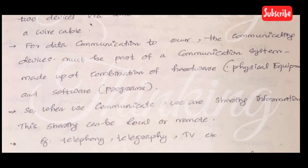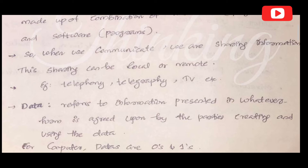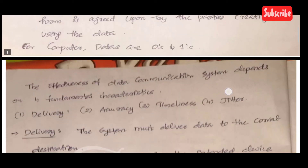When we communicate, we are sharing some information. This sharing can be local or remote — for example, telephony, telegraph, TV, etc. Data refers to the information presented in whatever form is agreed upon by the parties creating and using the data. For computers, data is expressed in zeros and ones.